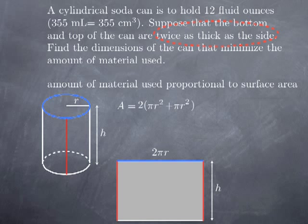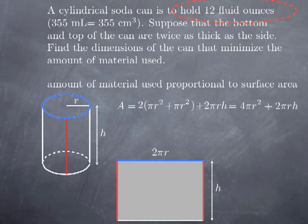This is the contribution of the side to the amount of material. So the total amount of material is proportional to 4πr² + 2πrh. The problem is this is a function of two variables. As usual, we'll use a constraint to transform it into a function of one variable only.